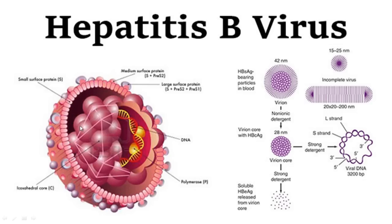In the diagram, you can see the spherical particle, the filamentous particle, and the 42 nm Dane particle. Other structures shown include the icosahedral symmetry, the partially double-stranded DNA genome, and the hepatitis B surface antigen. Closely looking at this, the hepatitis B surface antigen is made up of three kinds of protein: the small surface protein, the medium surface protein, and the large surface protein.